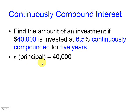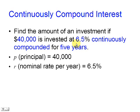In our case, the principal is 40,000, the nominal rate per year is 6.5%, and the time is five years.